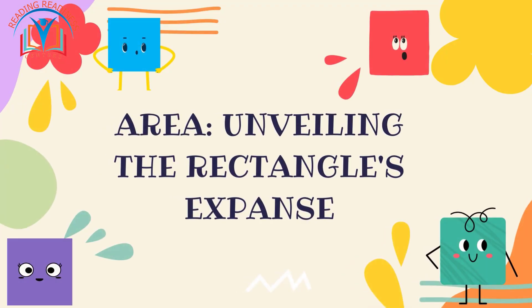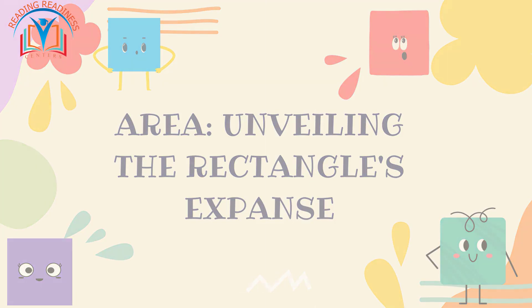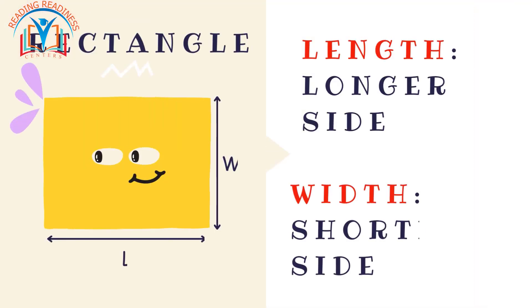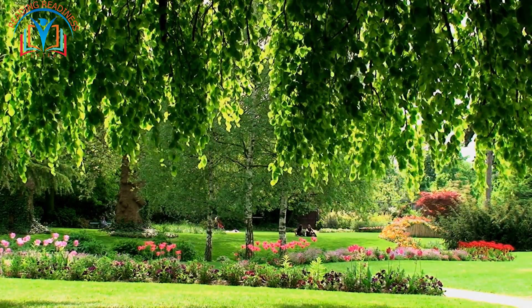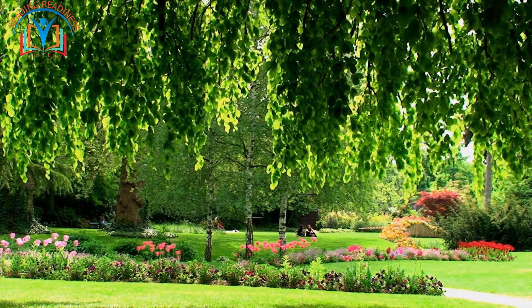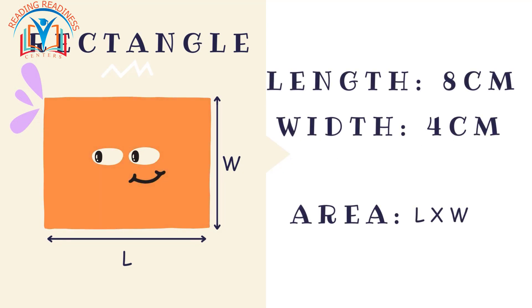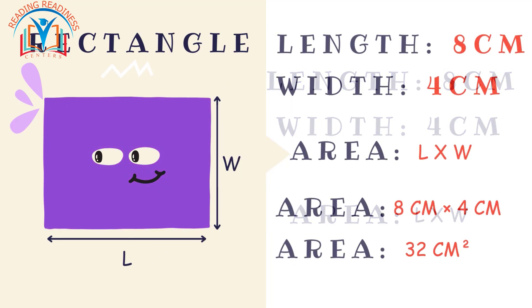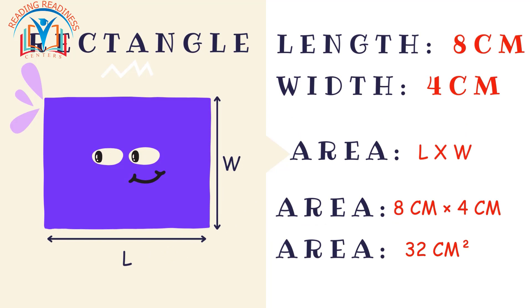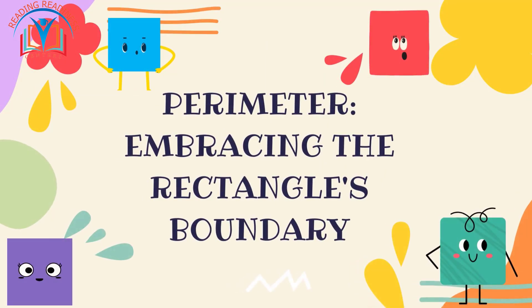To determine the area of a rectangle, we need to measure its length and width. Length refers to the longer side, while width refers to the shorter side. For instance, if your garden has a length of eight centimeters and a width of four centimeters, its area would be 8 cm × 4 cm = 32 square centimeters.